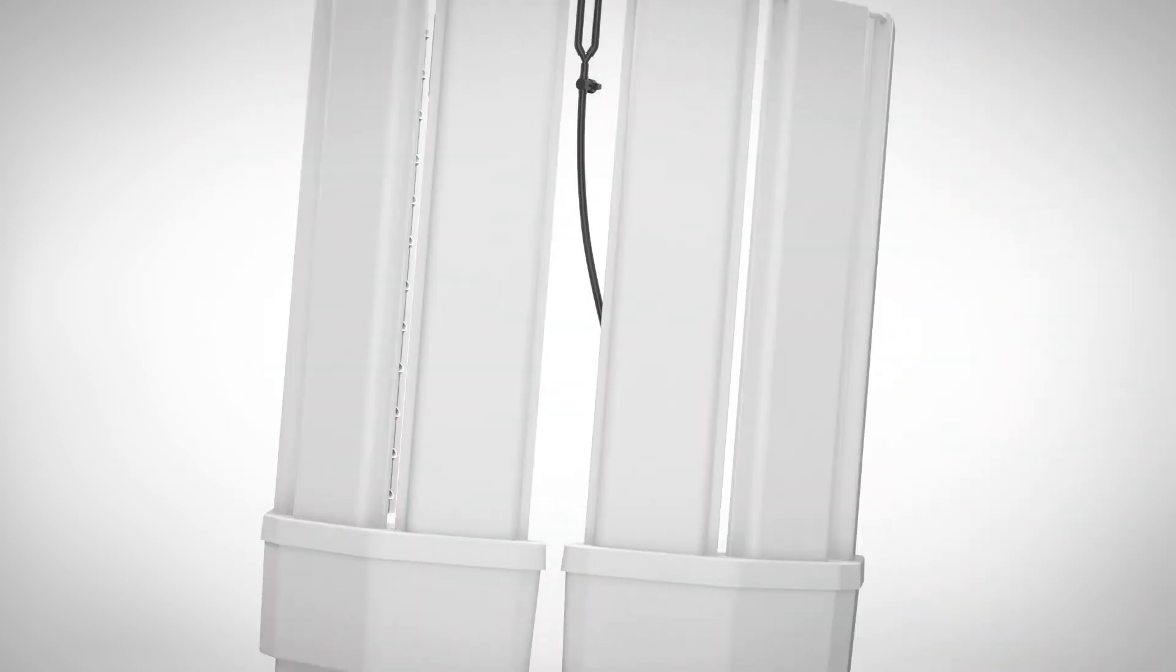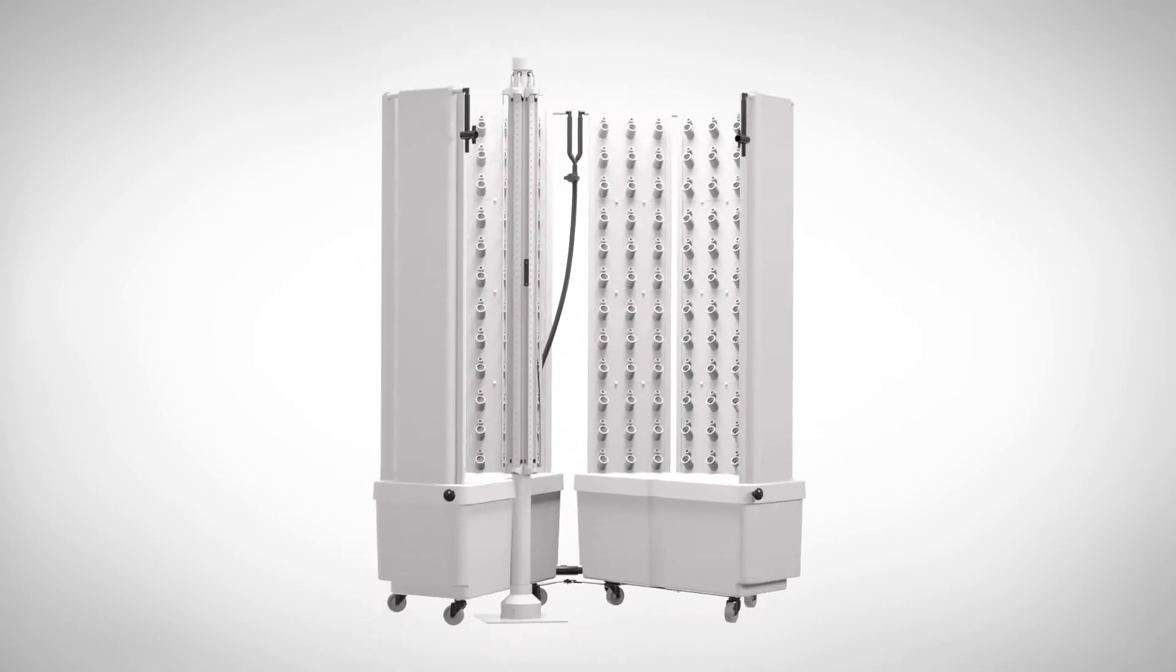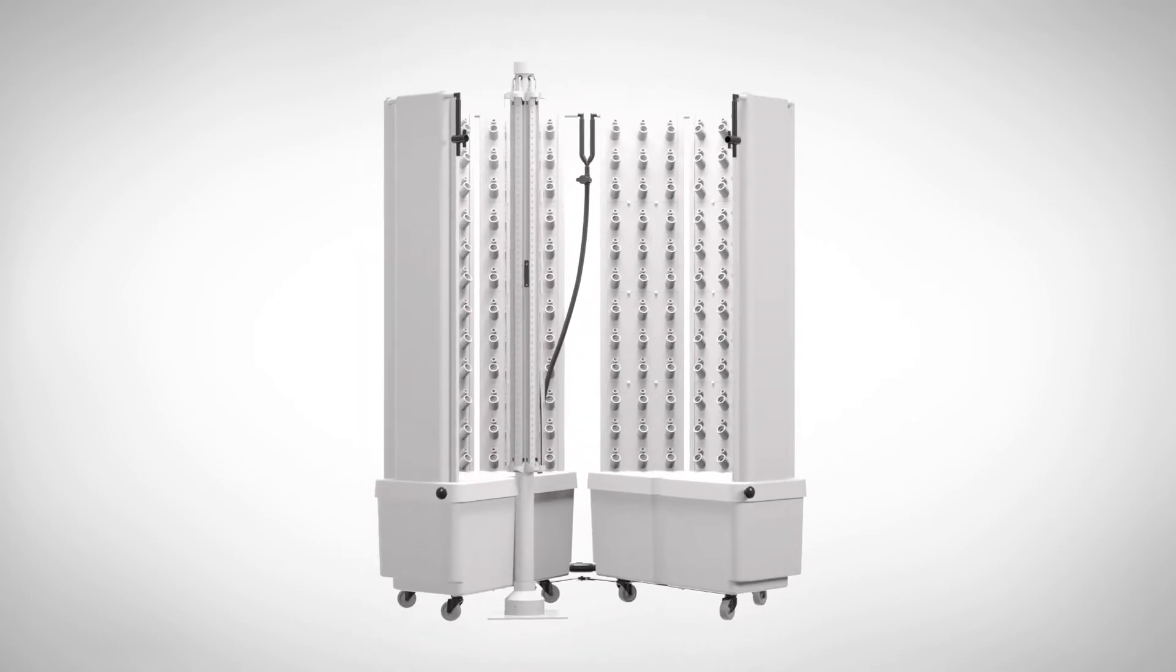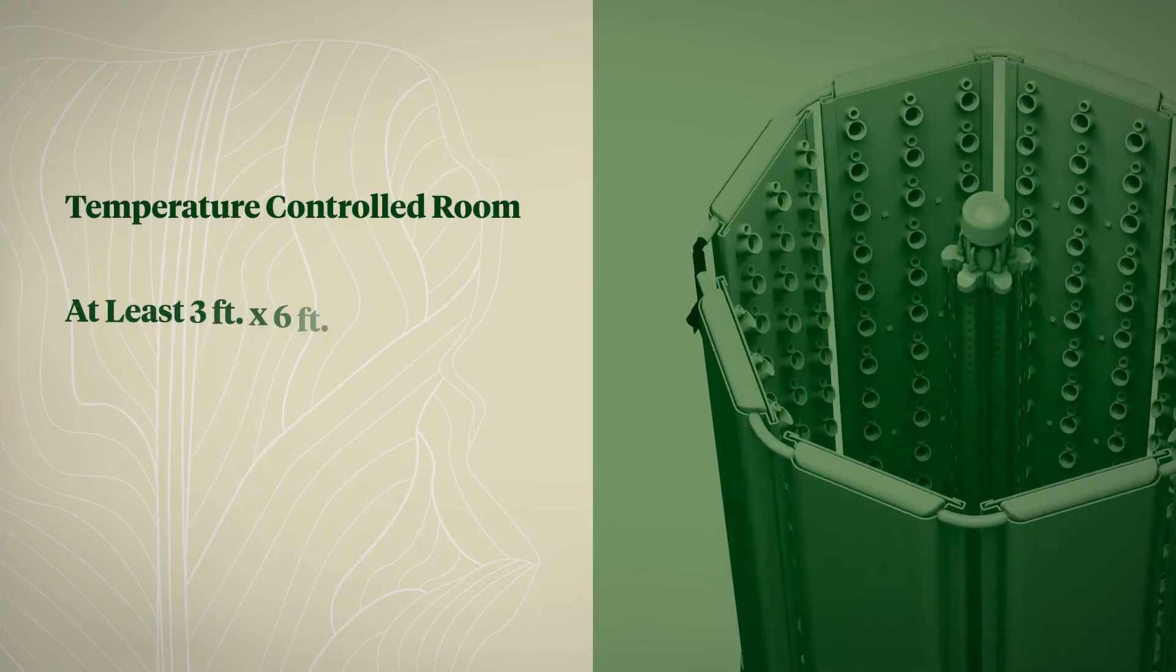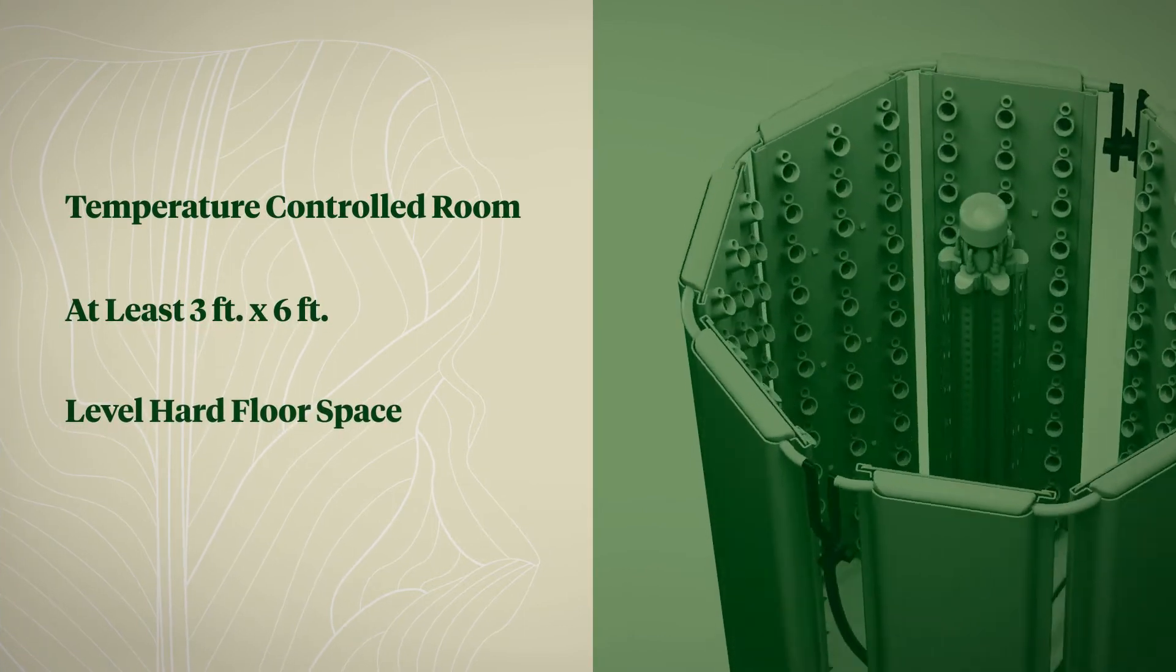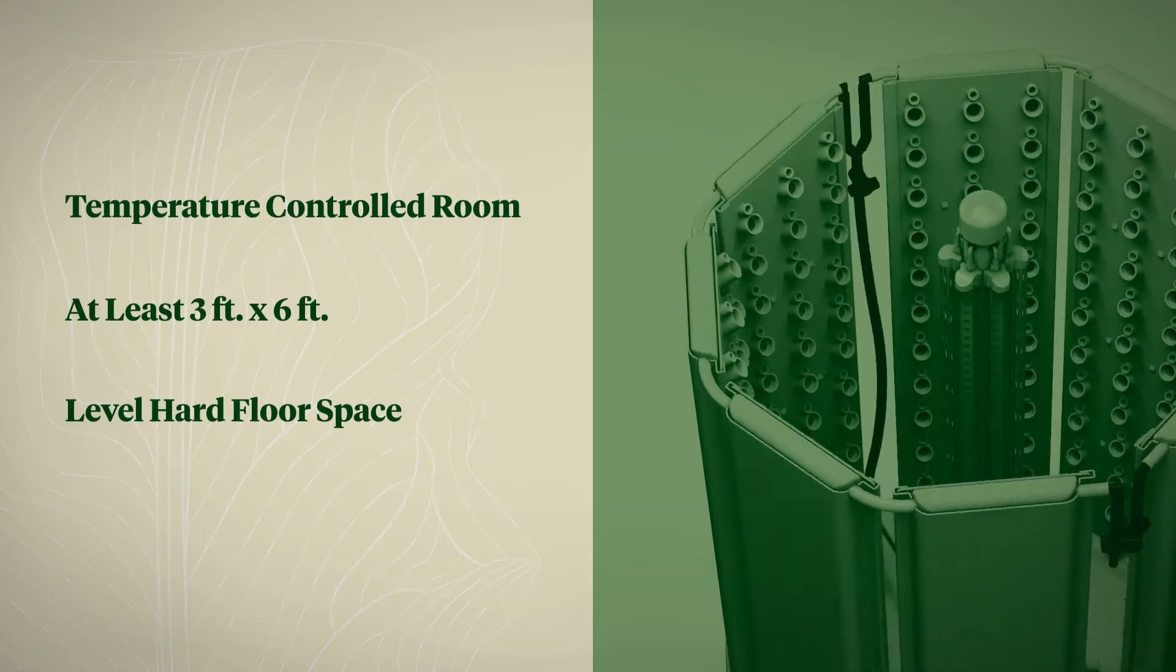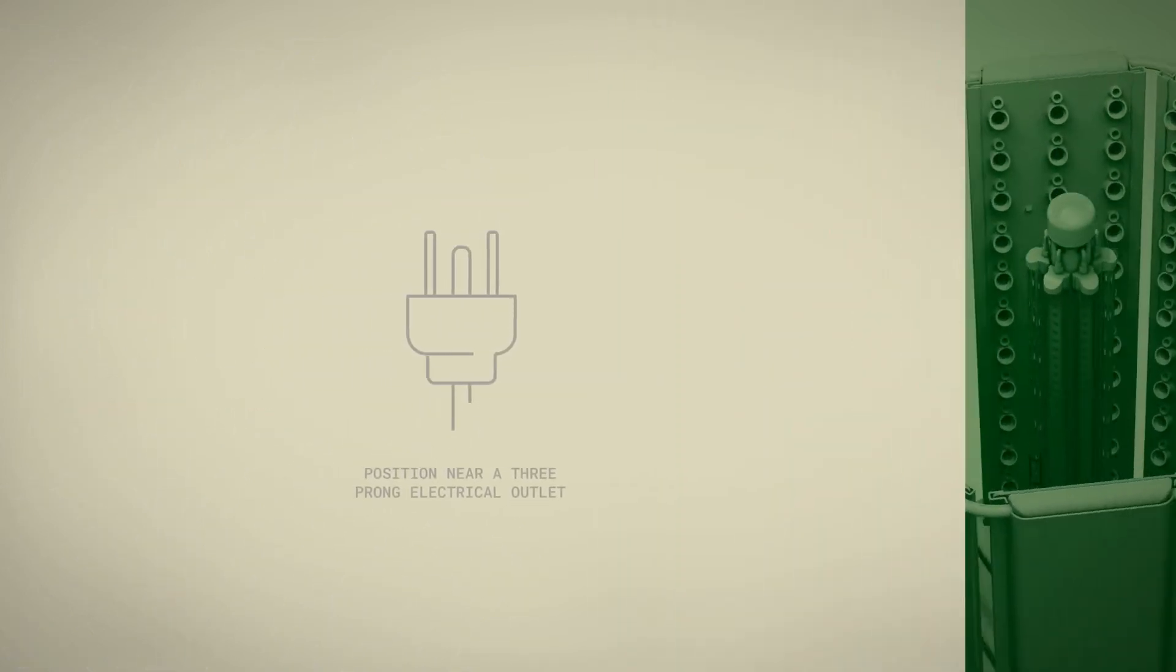Welcome to the FlexFarm assembly video. The first thing you'll need to do is decide where to set up. The ideal spot is in a temperature-controlled room with at least three feet by six feet of level hard floor space and a standard ceiling height positioned near a three-prong electrical outlet.